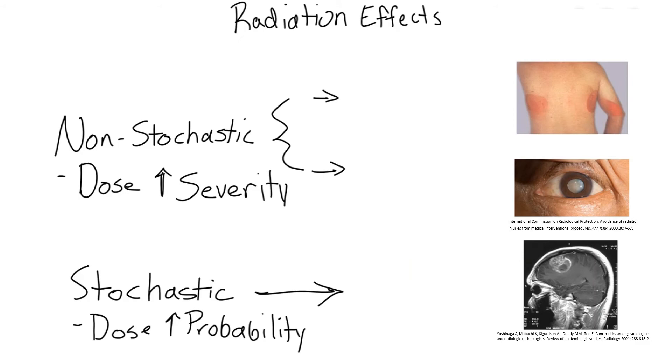So what are some effects from scatter radiation? Well, you can have non-stochastic effects, which simply means that as you increase the dose exposure, you increase the severity of the effect, or stochastic, which means that as you increase the dose, you increase the probability of the effect.